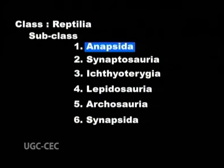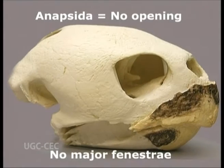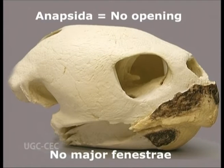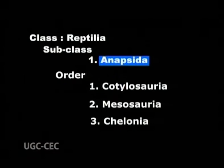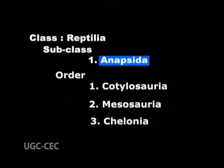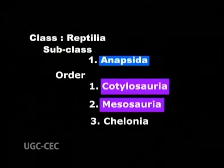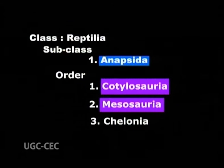Subclass 1 Anapsida — meaning no opening — refers to vertebrates that possess skulls with no major fenestrae. Anapsida is subdivided into three orders: Cotylosauria, Mesosauria, and Chelonia.